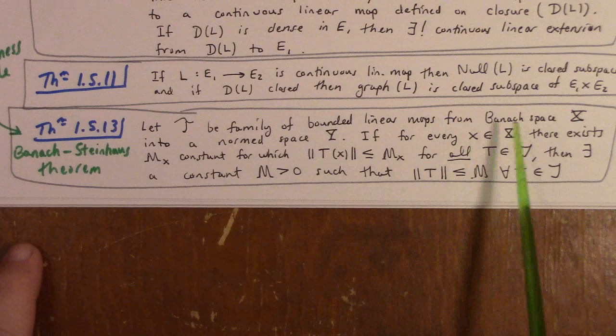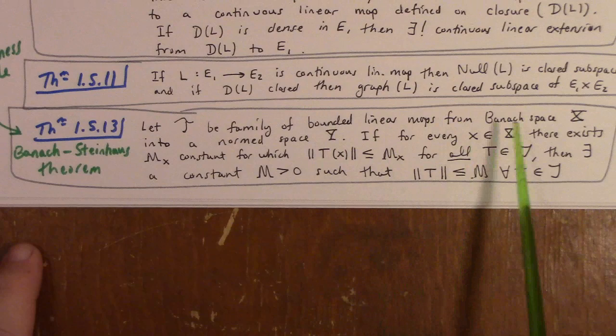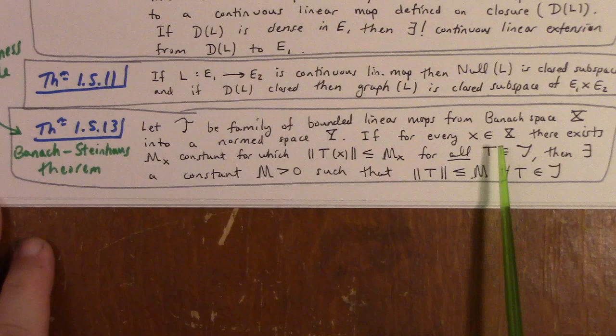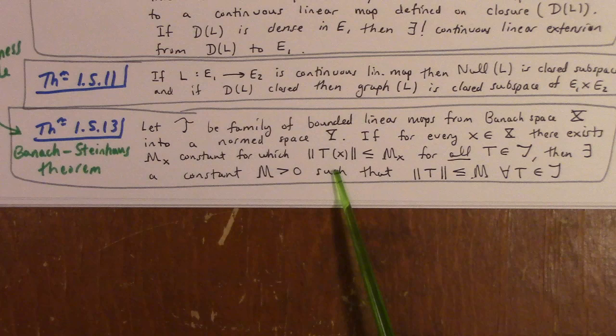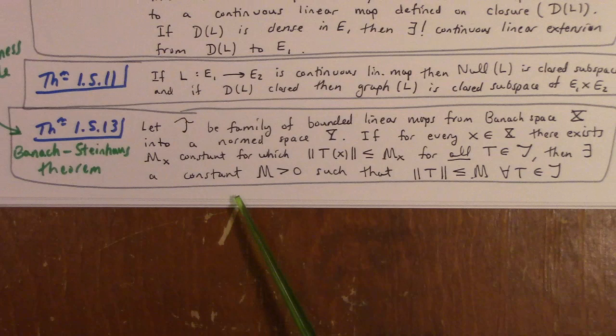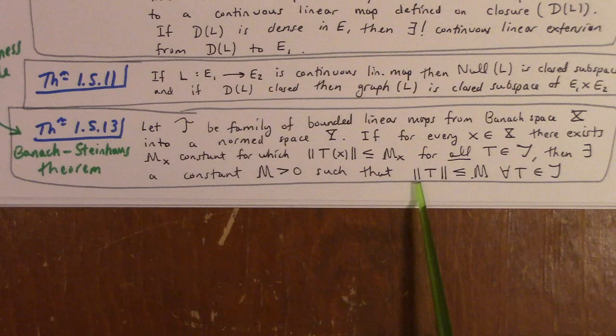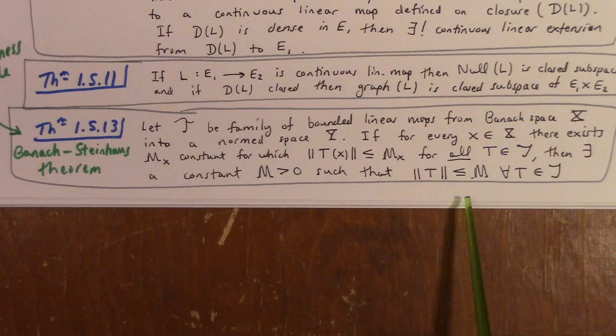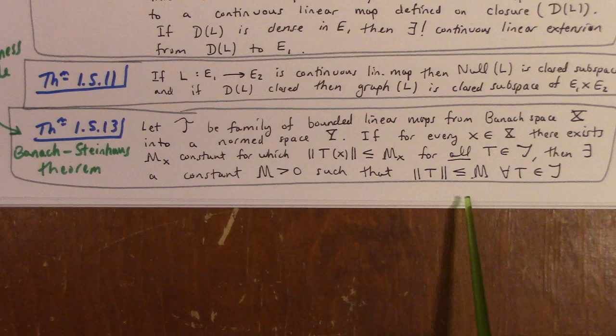The Banach-Steinhaus theorem, also known as the uniform boundedness principle, says that if you have a family of bounded linear maps from a Banach space X — remember Banach means complete normed linear space — to a normed space Y, and for every x in X there exists M_x such that the norm of T(x) is less than or equal to M_x for all operators T in the family, then there exists a constant M greater than zero such that the operator norm of T is less than or equal to M for all T in the family.